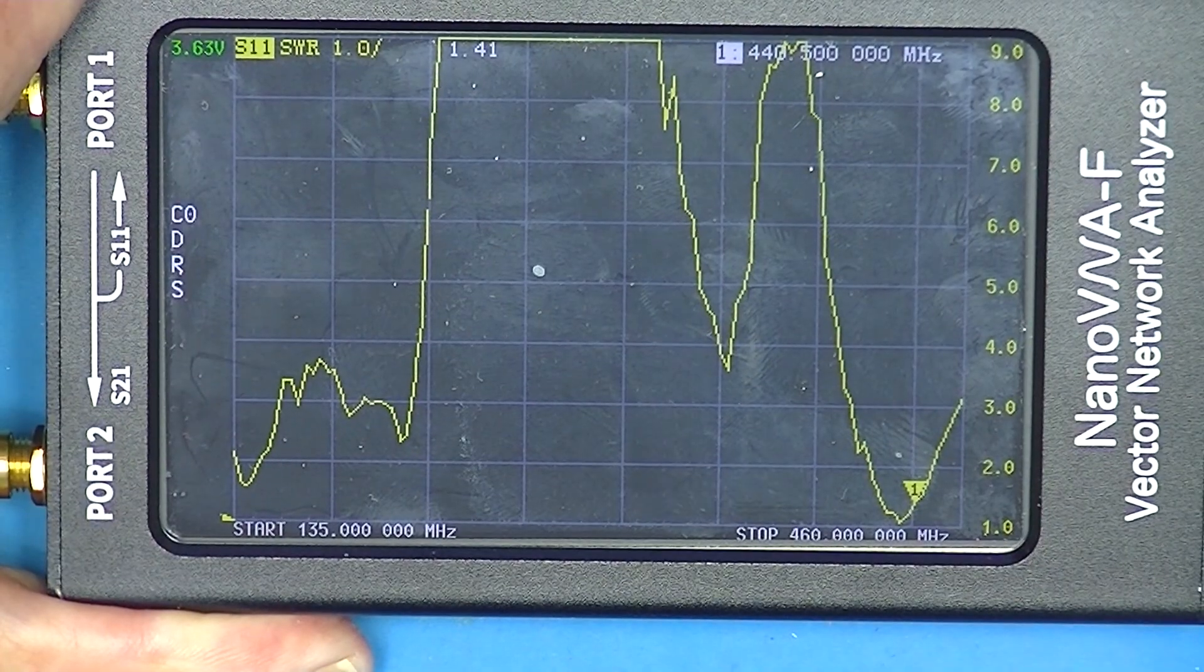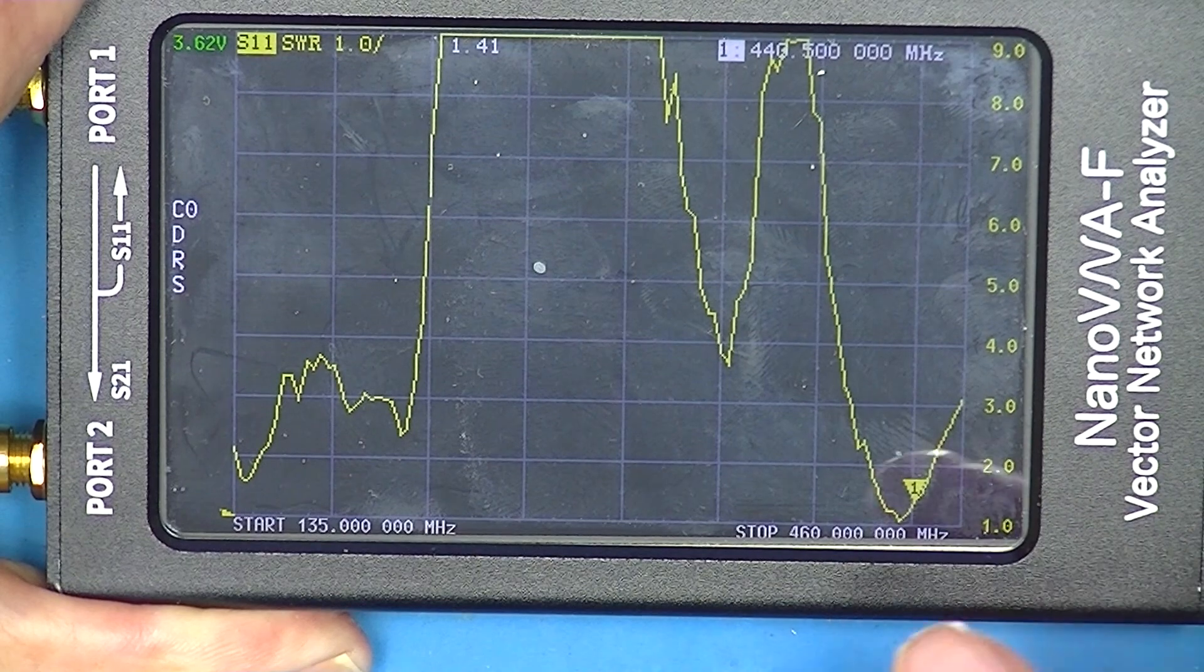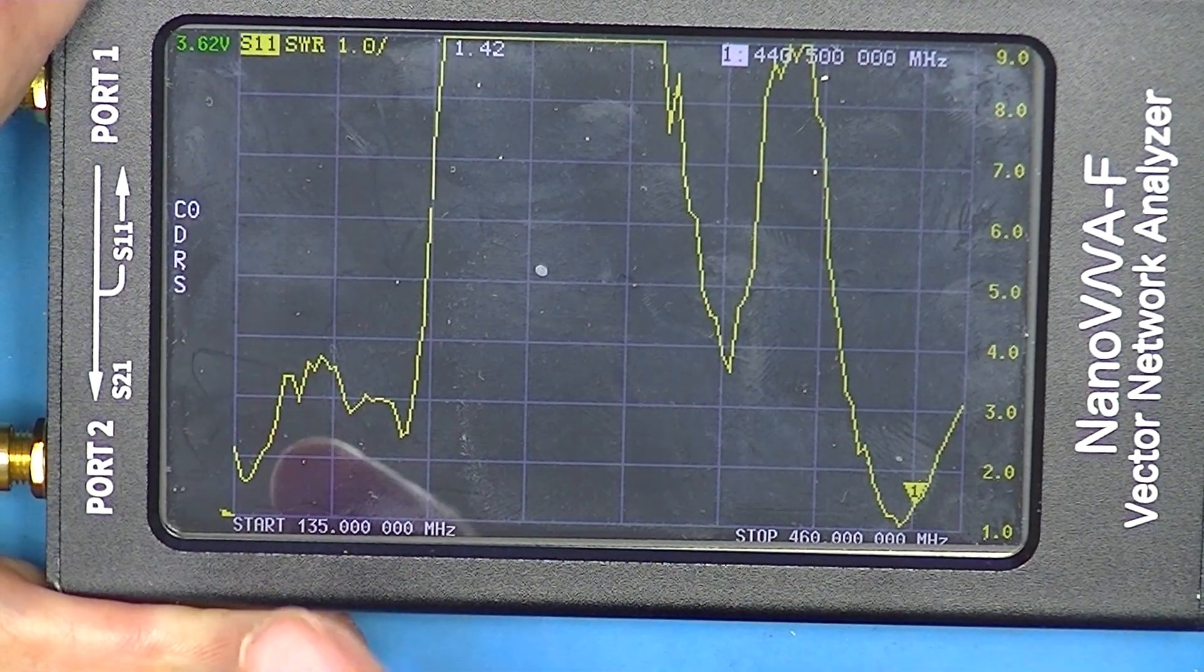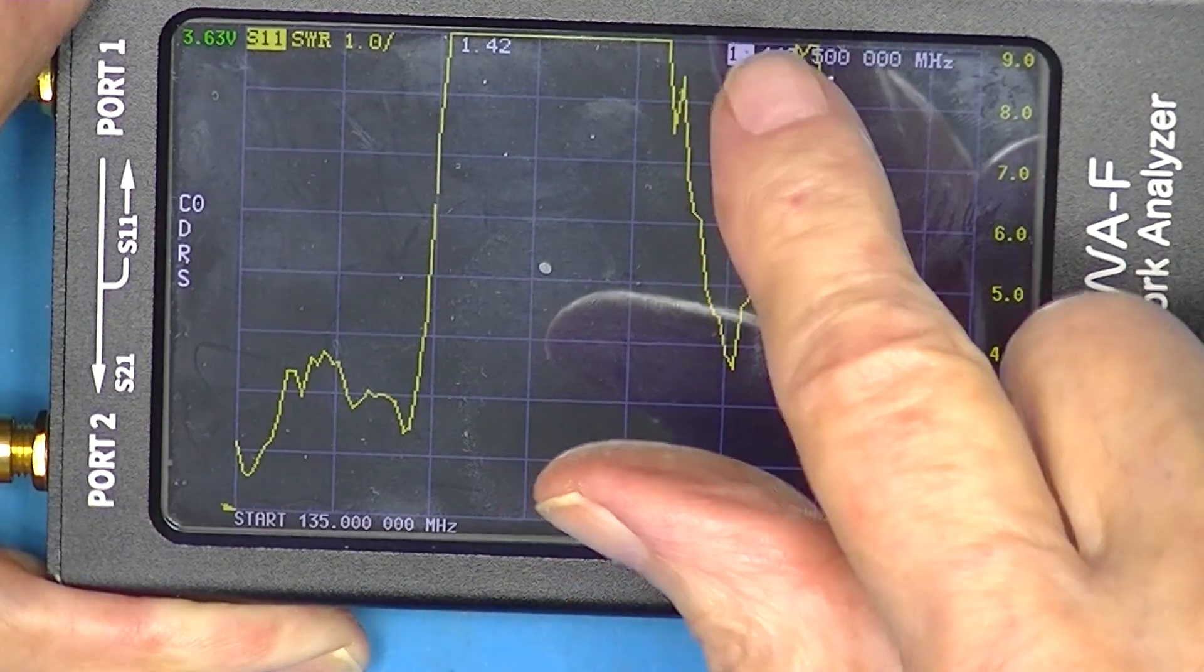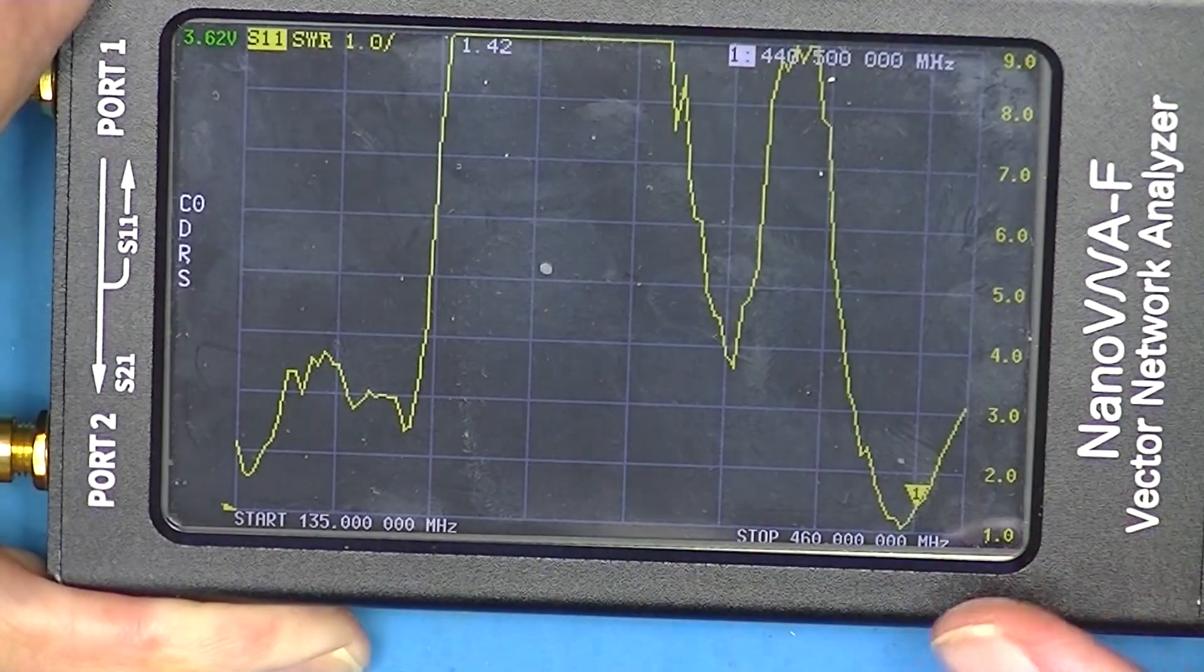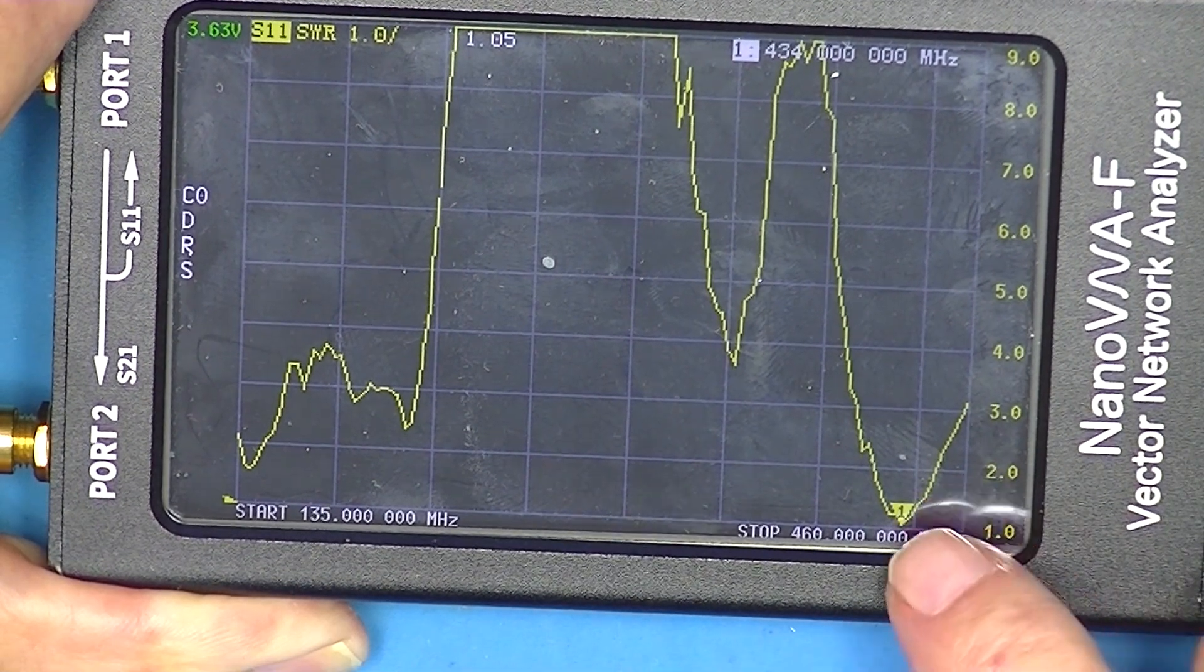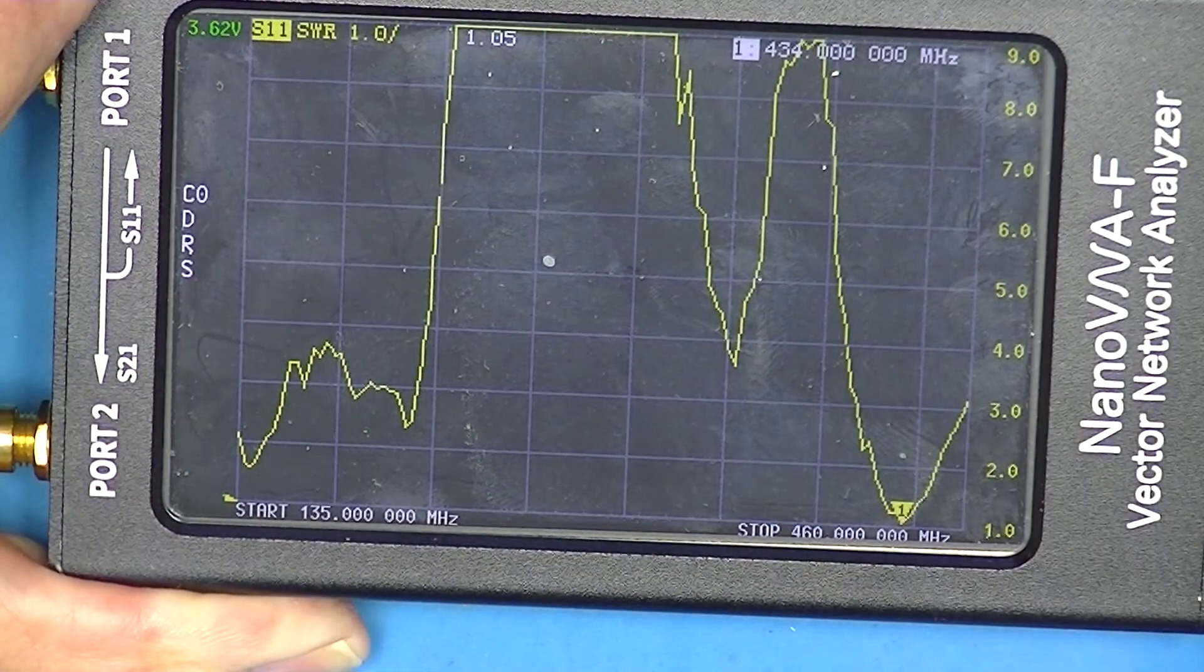Here we are back in the shop, and I've got this VNA looking at SWR. Right now the marker is at 440.5, and you see the SWR is 1.42. And at the bottom here is 434 megahertz, 1.06.